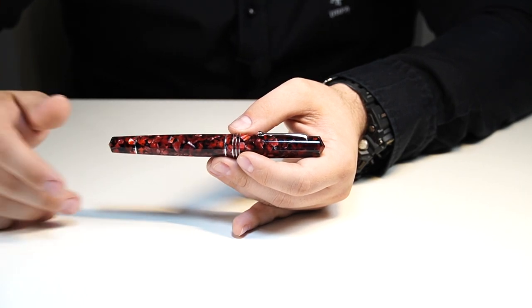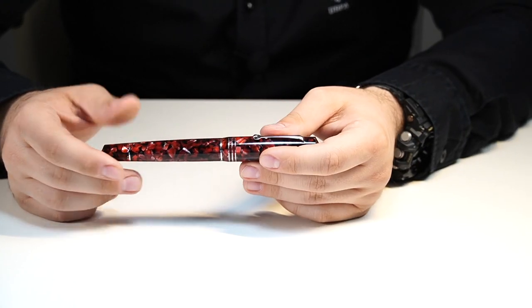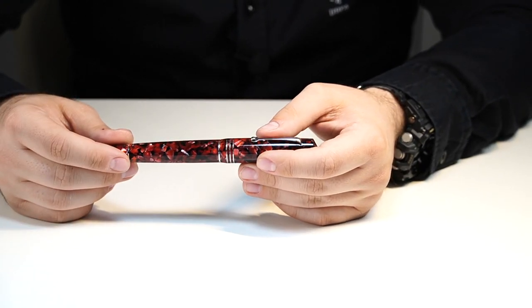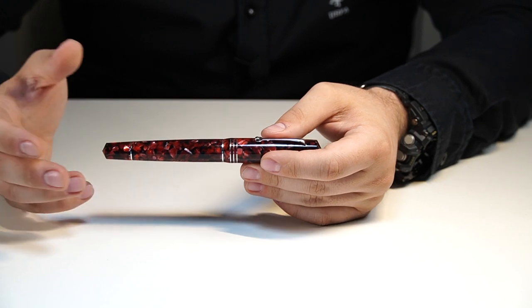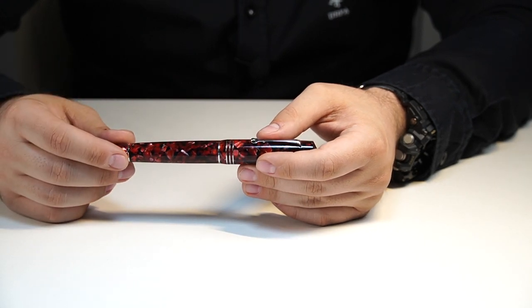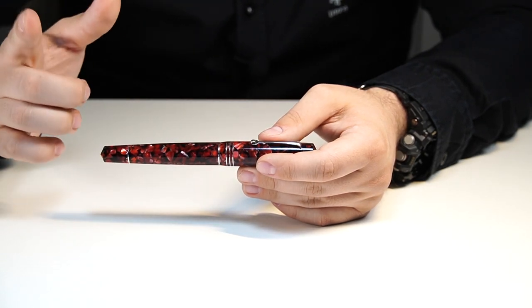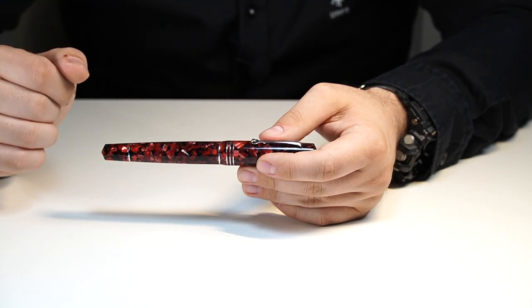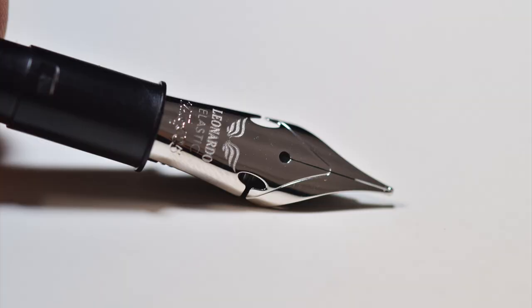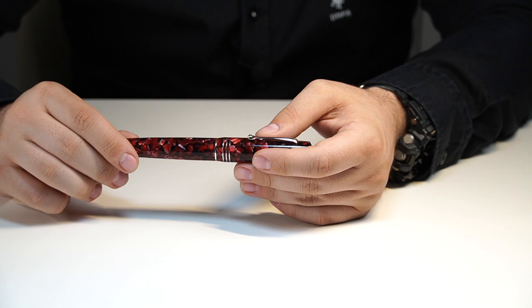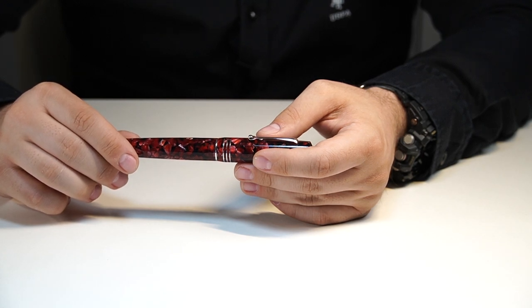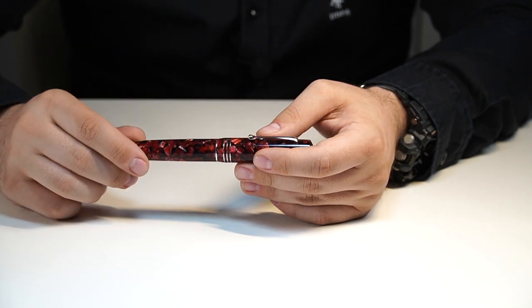For 14 karat gold, we have extra fine, fine, medium, broad and stub. And as for stub, that is a 1.3 millimeter stub in 14 karat gold. And we have available a specialty nib, the elastic fine one, which comes at a different price range and offers the possibility of flex to the pen.